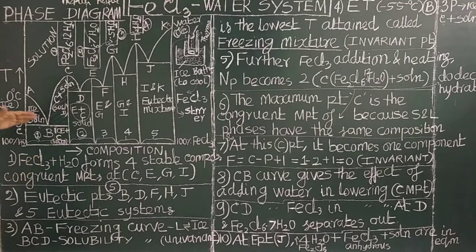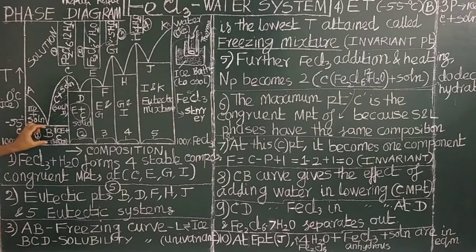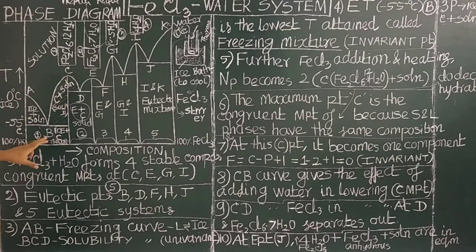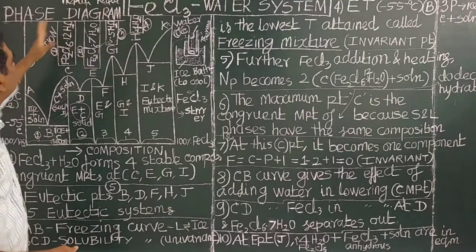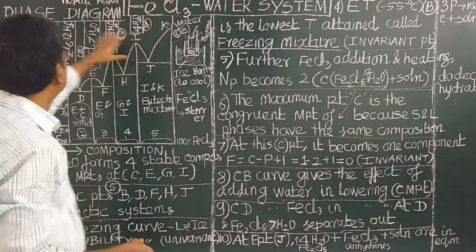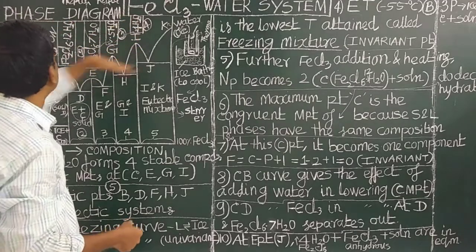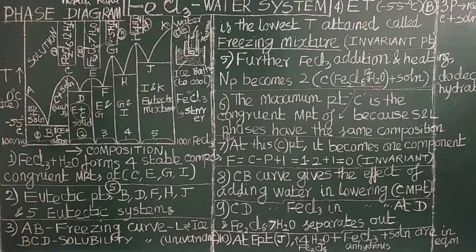Below the eutectic temperature, the eutectic mixture of ice and this compound is present. Above the AB curve, only solution is present. Similarly, for the potassium iodide system, above this curve it is all solution. Along the curve, the solution is in equilibrium with ice, and the system is univariant.